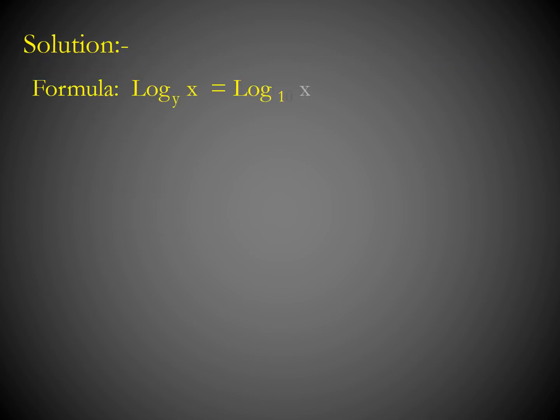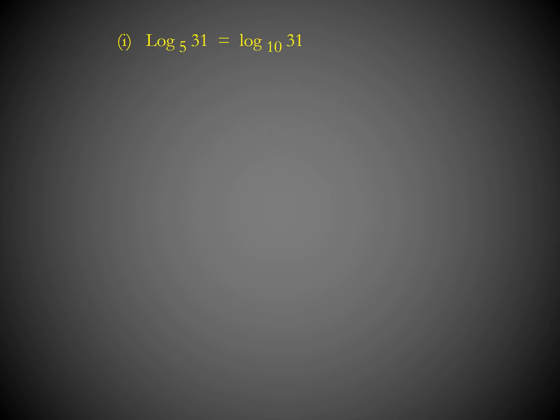Let's do the first part. For solving these types of questions, we always use the formula: log x to the base y equals log x to the base 10 divided by log y to the base 10. So log 31 to the base 5 can be written as log 31 to the base 10 divided by log 5 to the base 10.